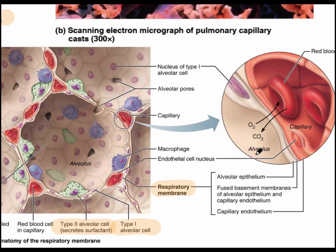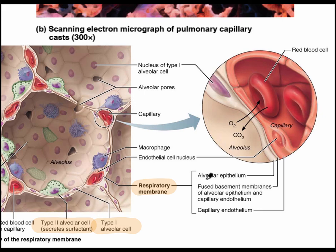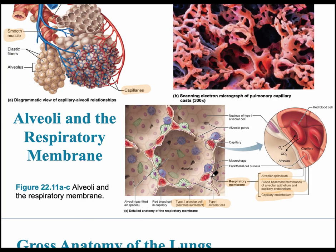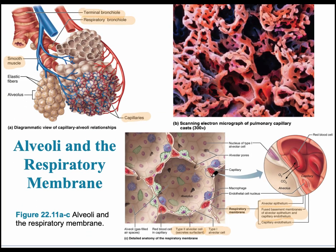The respiratory membrane — found between the alveolus and the pulmonary capillary — is made up of four layers: the alveolar epithelium, two fused basement membranes (one for the alveolar epithelium and one for the pulmonary capillary endothelium). This is where external respiration happens: oxygen diffuses from the alveolus, crosses the membrane, diffuses into the blood, and is transported on red blood cells. If this membrane thickens, it becomes more difficult for external respiration to occur and a disease state is more likely.